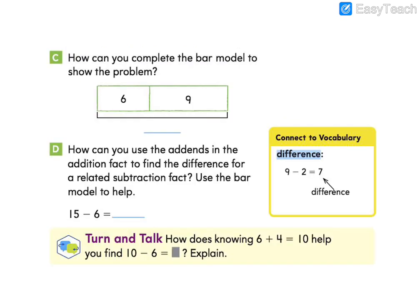Let's look at letter C now. How can you complete the bar model to show the problem? Here we have our two parts: group one of the ducks and group two that join. So in order to complete the bar model, we find the whole number of ducks in the pond is 15 ducks.